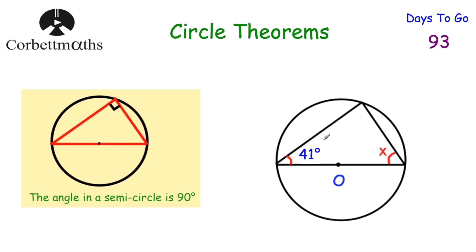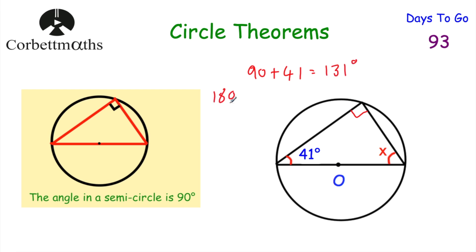Feel free to pause the video now and give this a shot. So we've got this triangle, and because this is the diameter and we've got a triangle inside the circle, that's going to be a right angle — 90 degrees. We've got this angle equal to 41 degrees. So 90 plus 41 equals 131 degrees, and then 180 subtract 131 equals 49 degrees. So x is equal to 49 degrees.